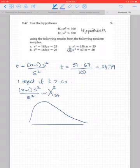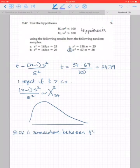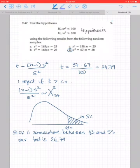So the critical value is somewhere... Let's say the 5% critical value is somewhere between 43 and 55. Our test is 24.79. So here I'm going to have my critical value. It's going to be around 49 or so. That leaves 5% to the right. So where is my test? My test is somewhere around here.